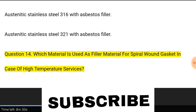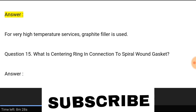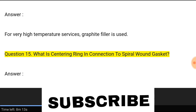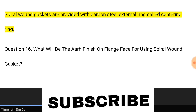Question 14: Which material is used as filler material for spiral wound gasket in case of high temperature services? Answer: For very high temperature services, graphite filler is used. Question 15: What is a centering ring in connection to spiral wound gasket? Answer: Spiral wound gaskets are provided with a carbon steel external ring called a centering ring.